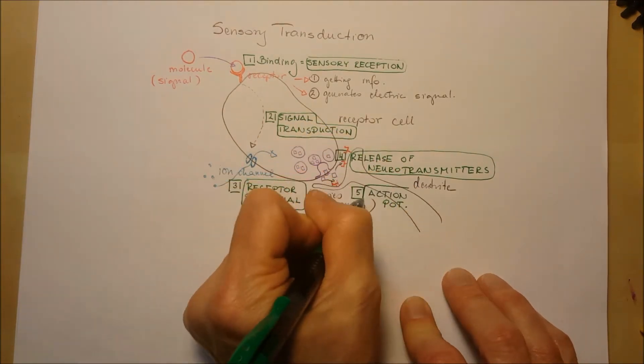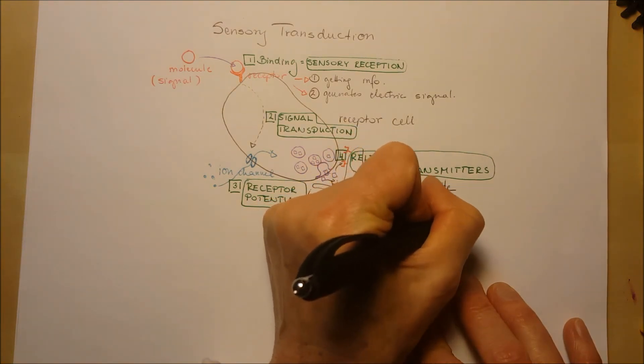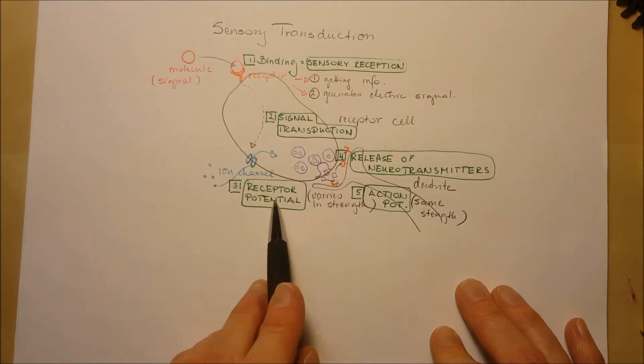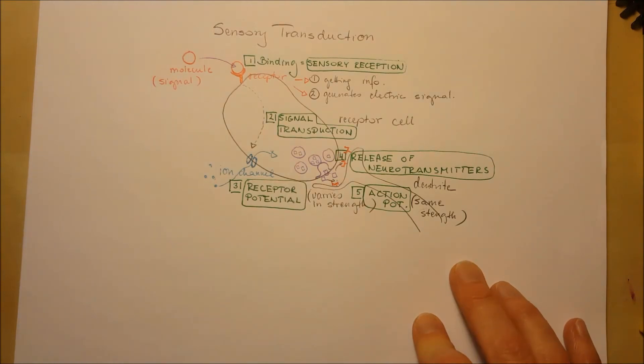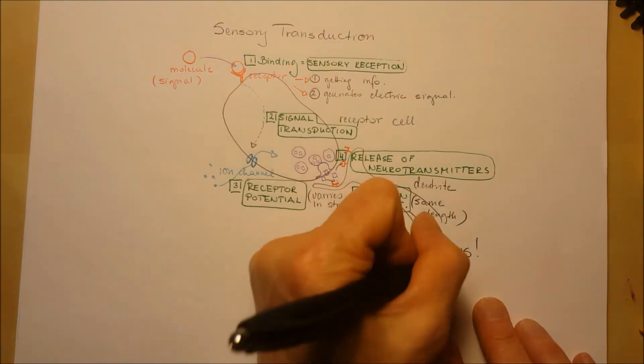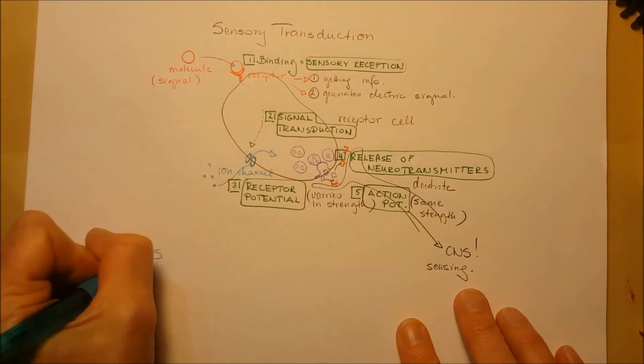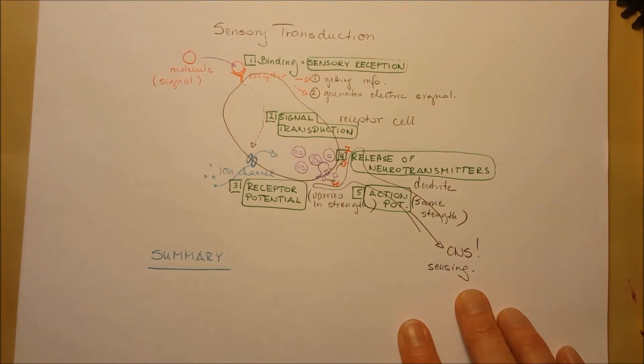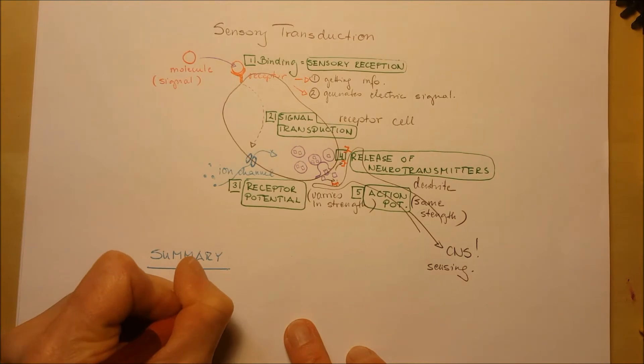And inside the neuron, an action potential will get generated. But it has the same strength all the way, as we learned in the nervous system. And after the action potential leads into the central nervous system, this dendrite is not always the dendrite. It can be an axon if we are talking about bipolar neurons.